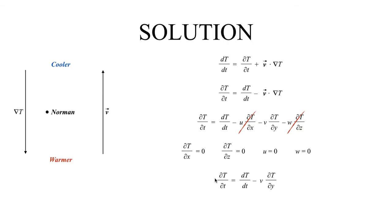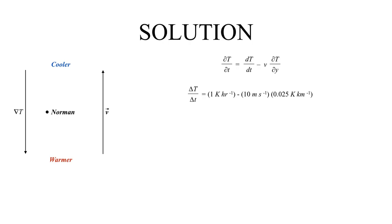We're left with: the local change in temperature with time equals the Lagrangian term (the radiational heating) minus the advection term V times the meridional component of the temperature gradient. Now we can start plugging in numbers: 1 Kelvin per hour minus the wind (10 meters per second) times the magnitude of the temperature gradient. Since the gradient points to the south, that is a negative term.